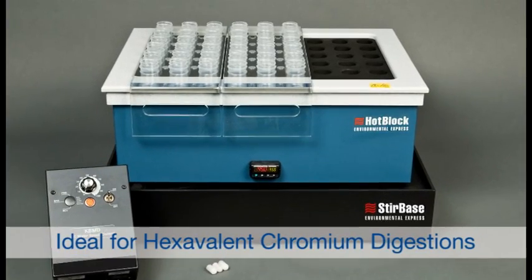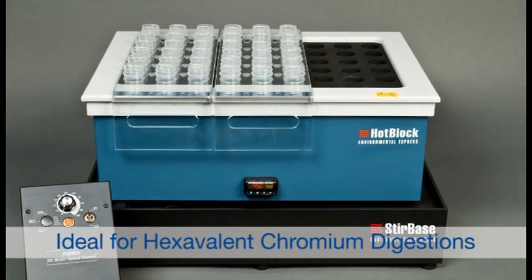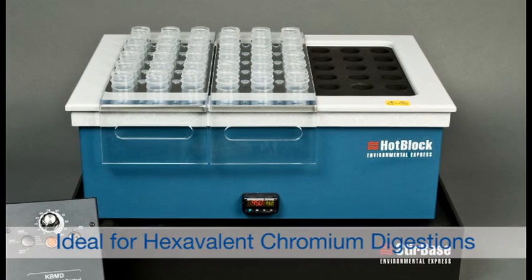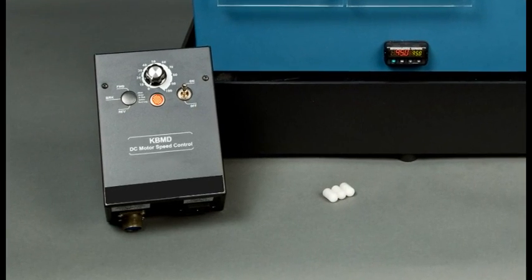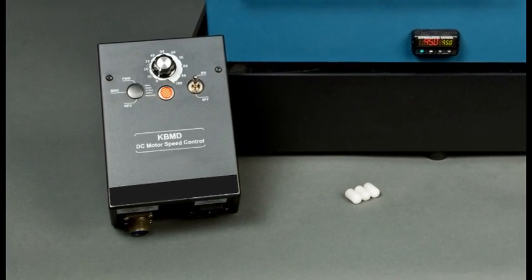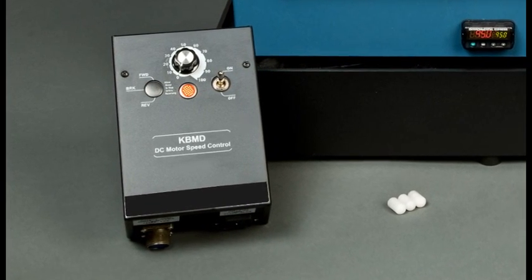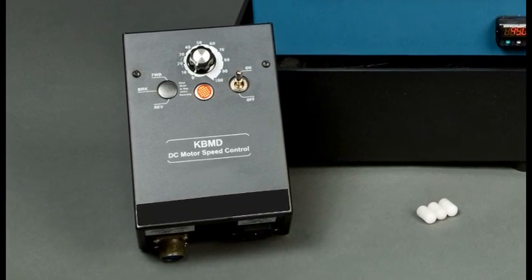The Environmental Express Stir Base also utilizes hot block technology while allowing constant stirring of your samples. The mixing speed is easily adjusted using the accompanying controller with a six-foot cable, eliminating the need to be inside the hood during digestions.